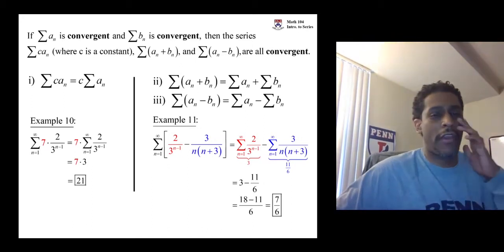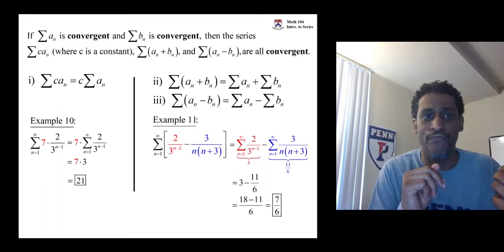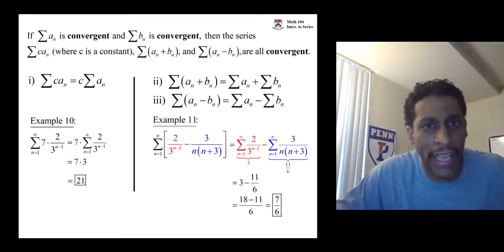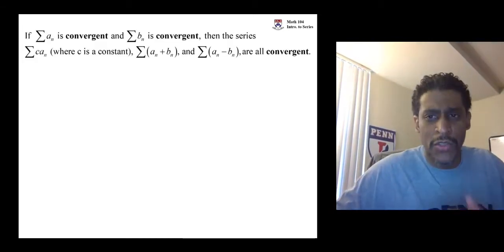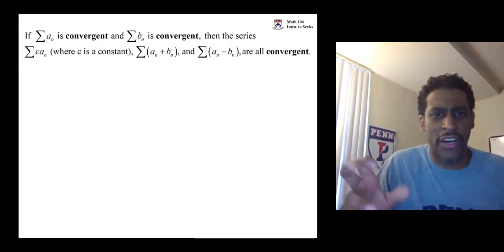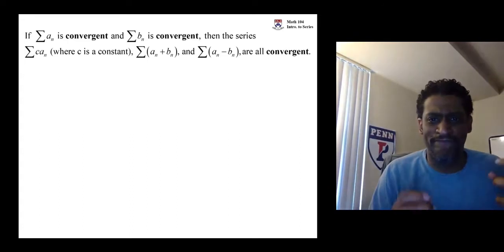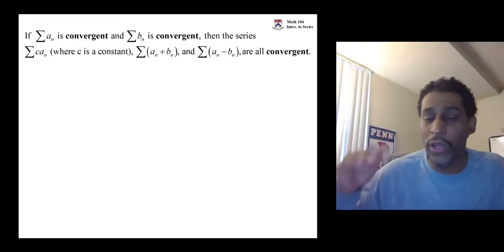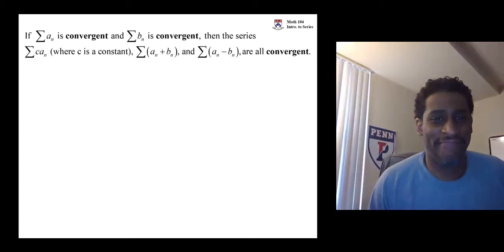So, then you might ask yourself, okay, what about a convergent and a divergent? Or what about two divergent? The other way is to combine. So, here's what we just did. Convergent with a convergent. No doubt about it. Add them together. Subtract them. Multiply one of them by a constant. It will still be convergent. No doubt about it.